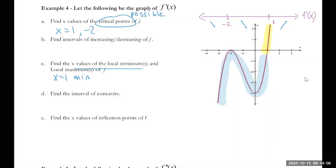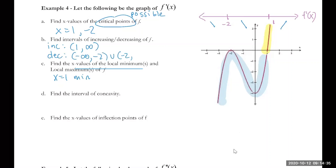For intervals of increase and decrease: the parts highlighted below the x-axis mean the first derivative is negative. The original function is increasing on the interval from one to infinity, and decreasing on the interval from negative infinity to negative two union negative two to one.